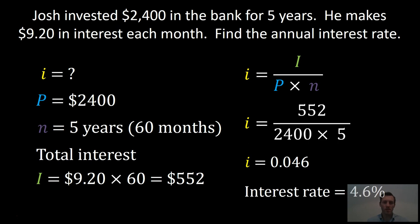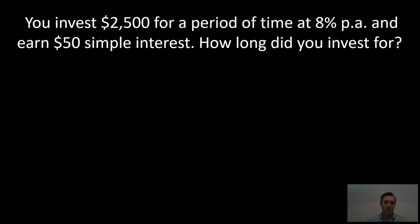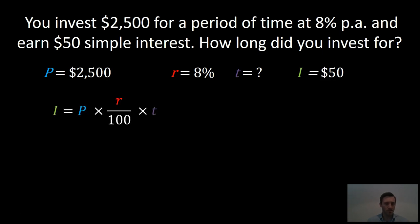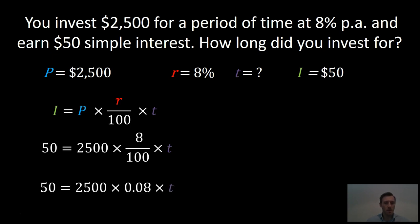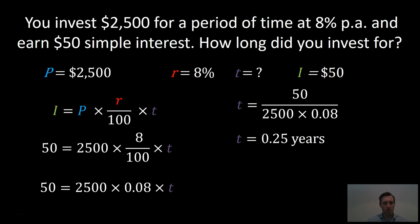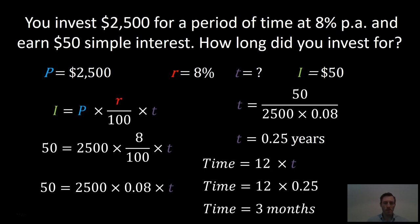You invest $2,500 for a period of time at 8% per annum and earn $50 simple interest. How long did you invest for? The principal is $2,500, the rate is 8%, and the interest is $50. Here we have the simple interest formula. We substitute the values: 50 equals 2,500 times 8 on 100 times T, which simplifies to 50 equals 2,500 times 0.08 times T. Dividing both sides by 2,500 times 0.08, we get T equals 50 divided by 2,500 times 0.08, giving time equal to 0.25 years. Converting to months — 12 times 0.25 — we get 3 months.